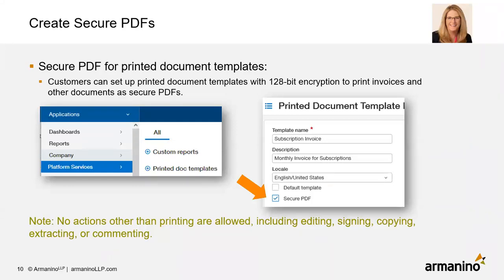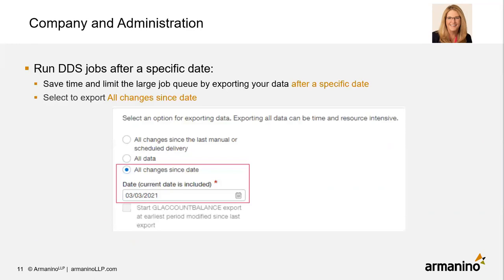Now with PDFs you share with customers, you can select to secure those PDFs with 128-bit encryption. To do that, go to platform services, go to printed doc template, find the template you want to secure, and check the box for securing it. Note that no actions other than printing are allowed when you send those documents — that includes editing, signing, copying, extracting, or commenting. Also, if you run DDS jobs, they've added a new choice to add all changes since a specific date to keep large queues down.